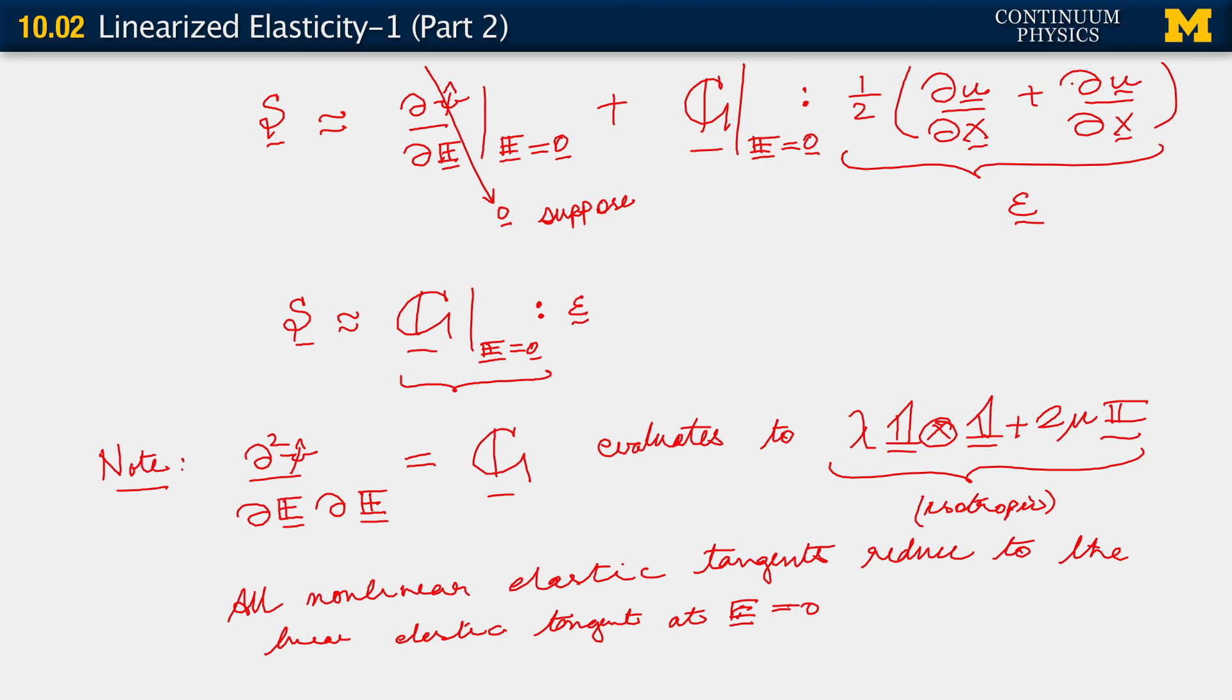And I just noticed now that I've missed the transpose up here. So that should be there. All right. So we've looked at what happens with the kinematics and with the constitutive relation. We've seen the origins of the use of the term linear elasticity, or linearized elasticity. We've seen how it comes about in the kinematics, how it works its way into the stress-strain relations. We'll take a break here. And when we come back, we'll look at the balance of linear momentum.